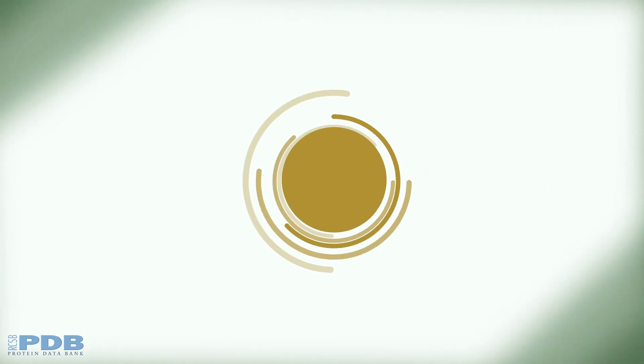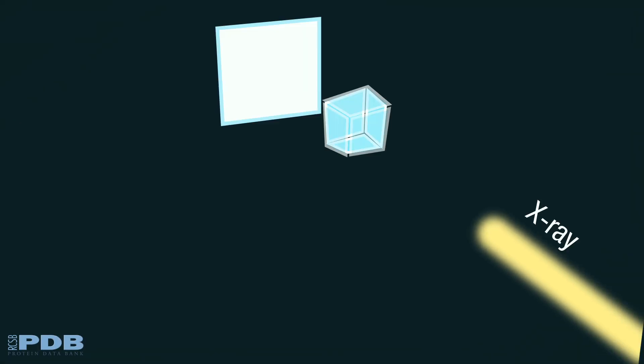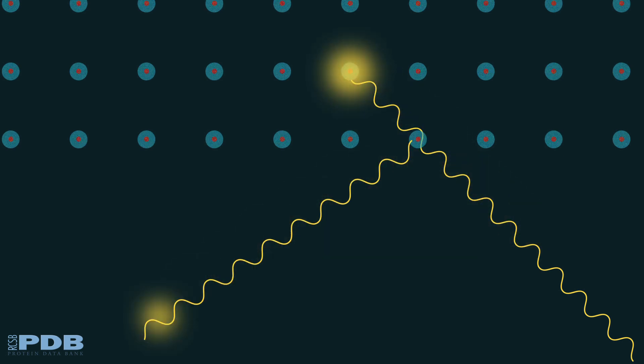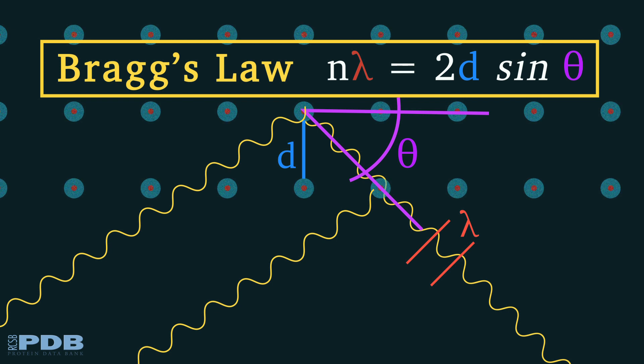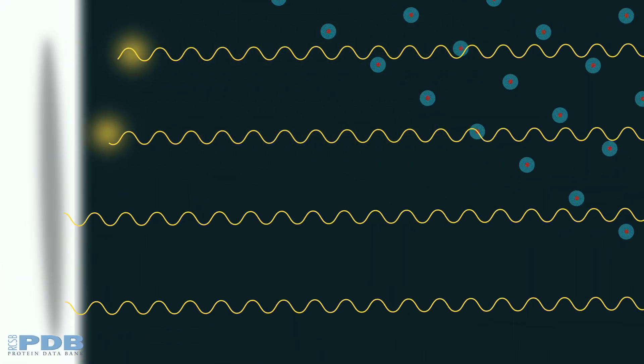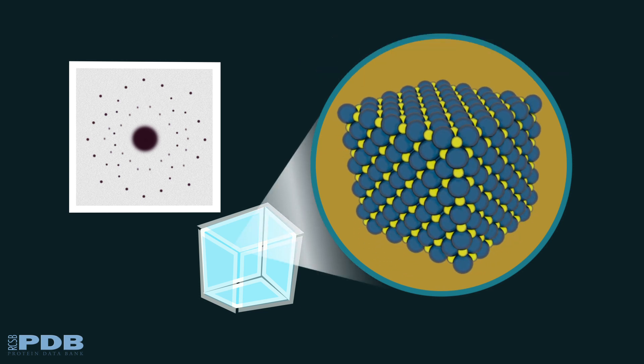In 1913, the father-son team, Henry and Lawrence Bragg, were the first to describe how to interpret the X-ray diffraction patterns. They used a sodium chloride or salt crystal for their experiments.